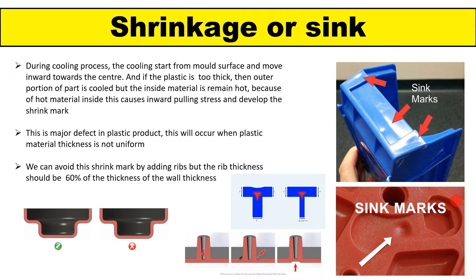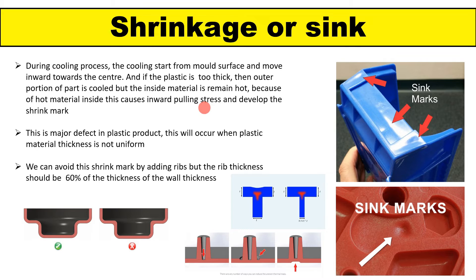These defects generally occur due to the cooling of the part. During the cooling cycle, the outer surface of the part is easily cooled, but the inside portion remains hot. Because of the incomplete cooling, the hot inside portion pulls the outer portion due to stretching. There is a heat difference — the outer surface is completely cooled while the inside portion remains hot. Because of that, this type of defect will come, which we generally call a sink mark.